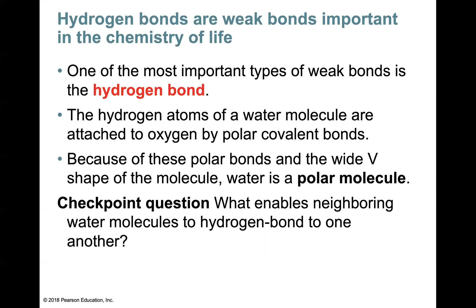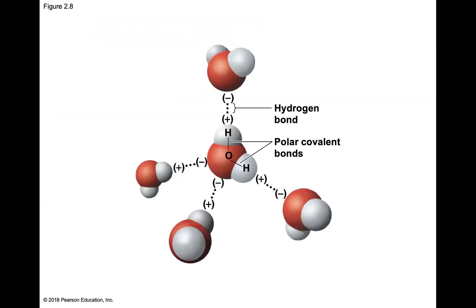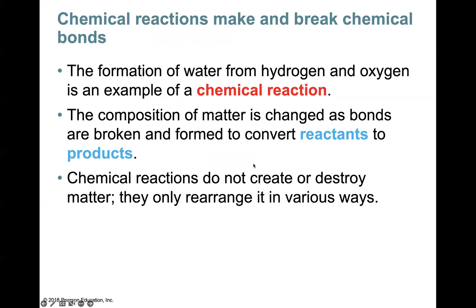Another type of bond you should be familiar with is the hydrogen bond. Hydrogen bonds are weak bonds but are very important in the chemistry of life. The hydrogen atoms of a water molecule are attached to oxygen by polar covalent bonds. Because of these polar bonds and the V-shape of the molecule, water is considered a polar molecule. Checkpoint question: what enables neighboring water molecules to hydrogen bond to one another? We've got hydrogen bonds between water molecules and polar bonds within a water molecule.